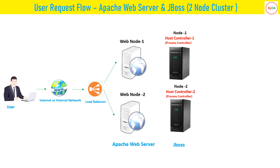As discussed in session one, we have a host controller on each host running your servers. On node 1 we have host controller 1, and on node 2 we have host controller 2. On each node there is also a process controller running on a separate JVM — a separate JVM process for the host controller and a separate JVM process for the process controller. The process controller is a supporting process for the host controller, helping manage the server groups and automatically restarting the host controller if it crashes.